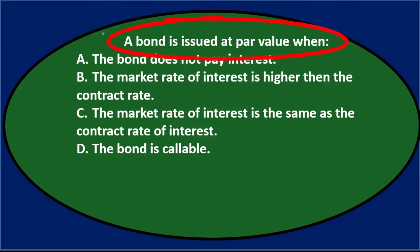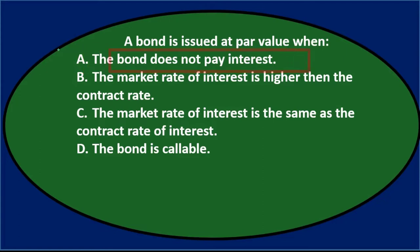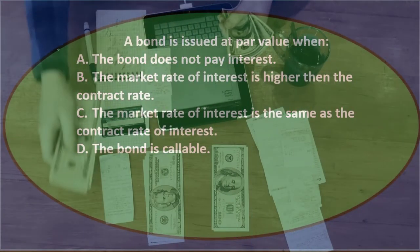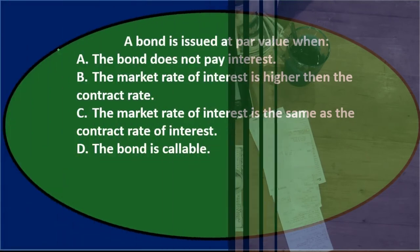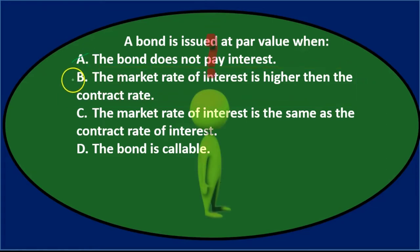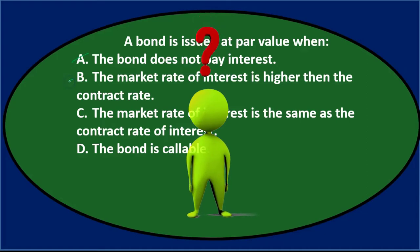Par value means the bond is issued at its face amount. Option A — the bond does not pay interest — is unlikely, because almost all bonds pay interest. Who would lend money without receiving interest? Option B says the market rate is higher than the contract rate, which could relate to interest rates, so let's keep that one.